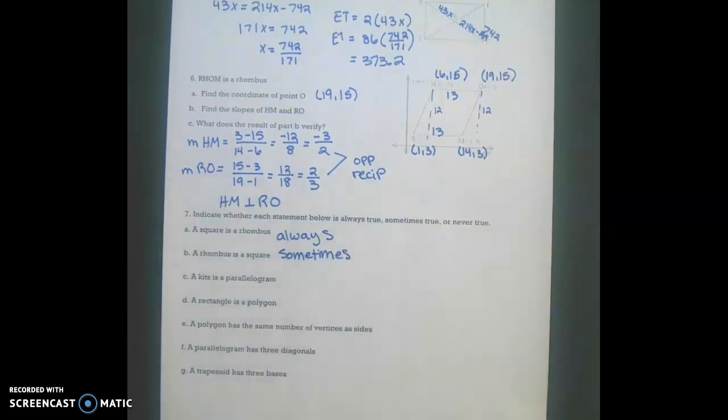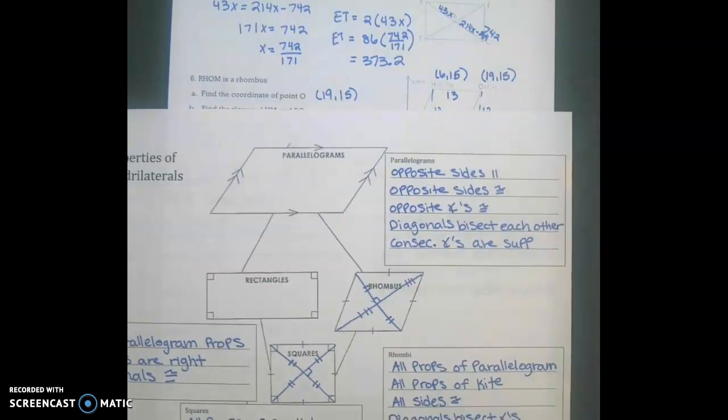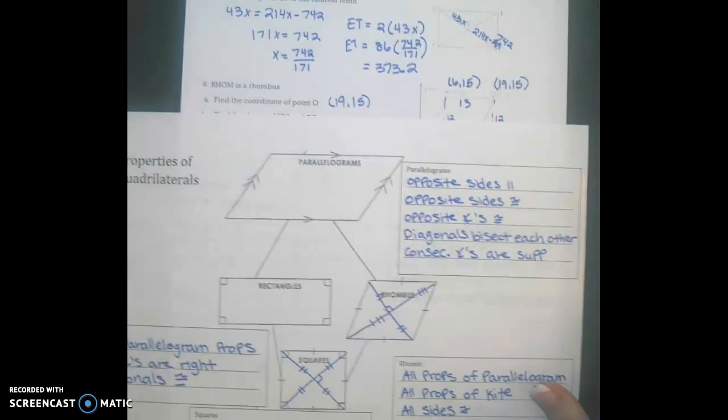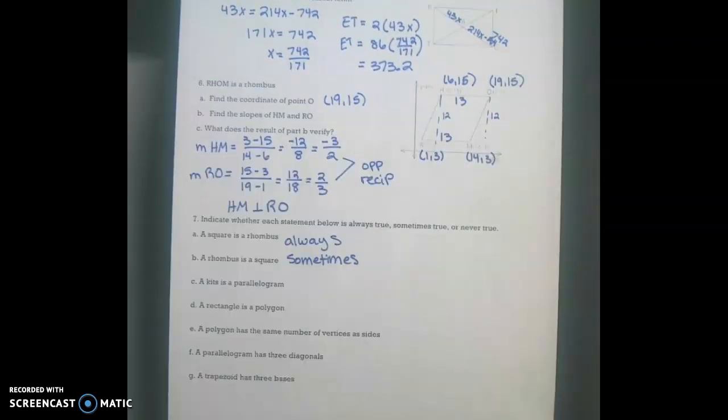A kite is a parallelogram. Now the only parallelogram that shares properties of a kite would be a rhombus, but not all parallelograms are rhombus. So that's also going to be a sometimes.